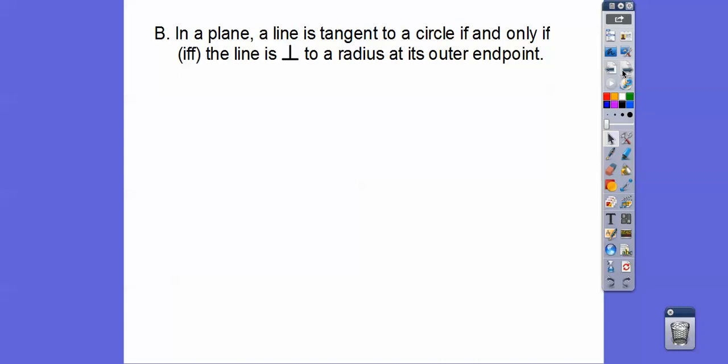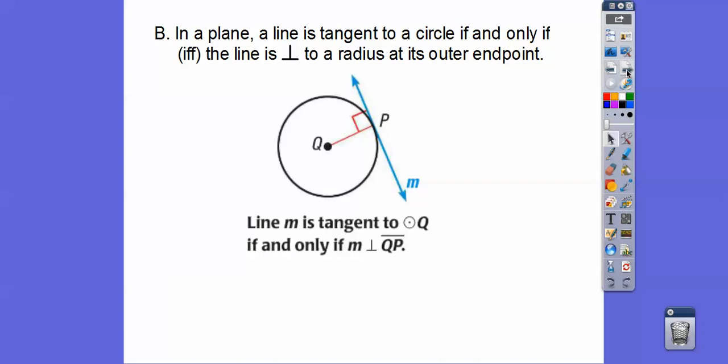So in a plane, if a line is tangent to a circle, if and only if, and so we abbreviate if and only if with IFF, the line is perpendicular to the radius at its outer endpoint, and you're thinking, what does that mean?